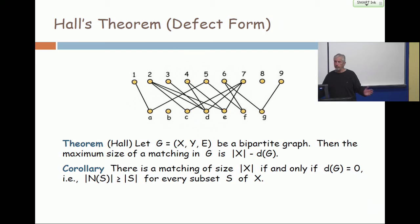Turn on Ford-Fulkerson and go get a milkshake. When Ford-Fulkerson halts, it gives you the maximum size of the matching, and take cardinality of X minus that, that's the defect.